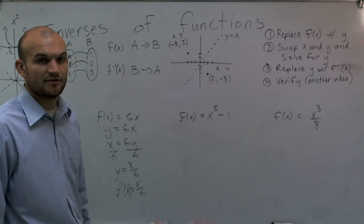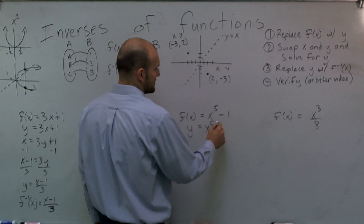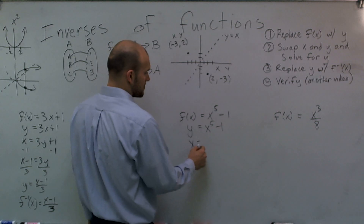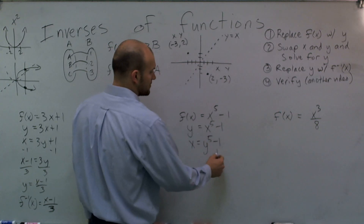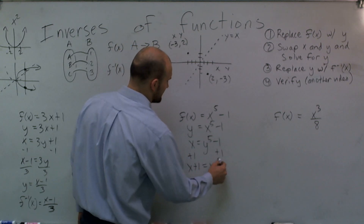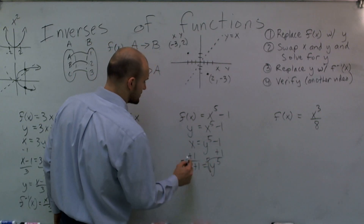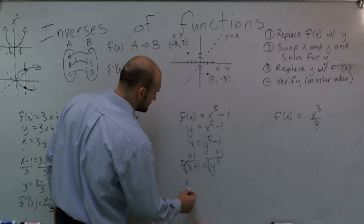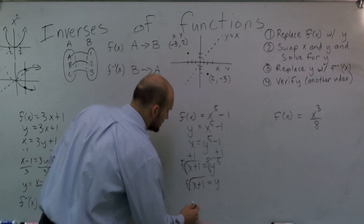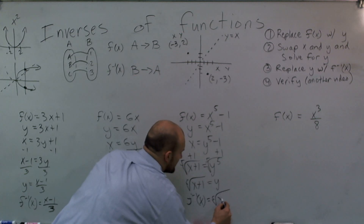Next problem: f(x) = x⁵ - 1. Simply write y = x⁵ - 1. Swap x and y's: x = y⁵ - 1. Add 1: x + 1 = y⁵. Take the fifth root on both sides: fifth root of (x + 1) equals y. In correct notation: f inverse of x equals the fifth root of (x + 1).